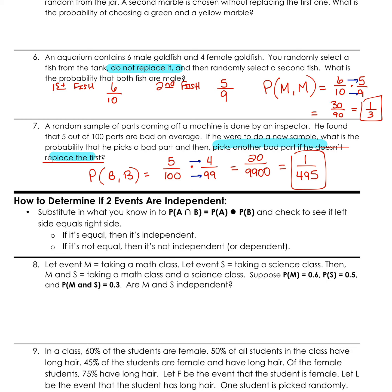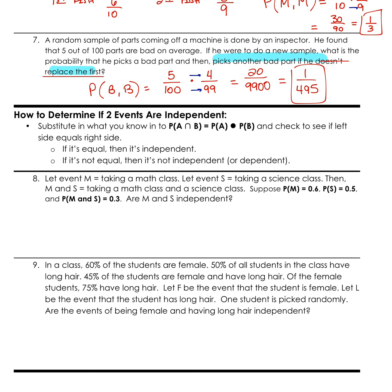So this is a little new. How to determine whether or not our events are independent. So what we're going to do is we're going to substitute what we know. So the probability of A and B, so my little upside-down intersection, remember that means and, the probability of A and B equals the probability of A times the probability of B. If our left side equals our right side, then we have an independent study. If it's not equal, it's not independent. So if it doesn't work out, we can say that it's not independent.